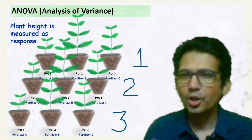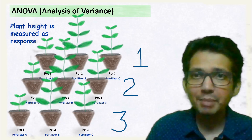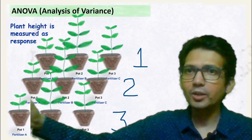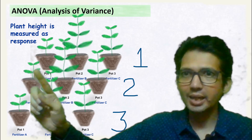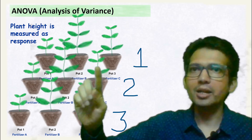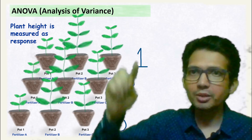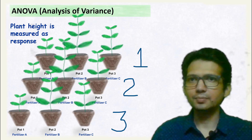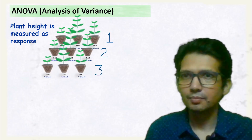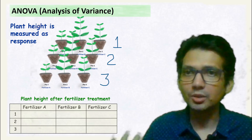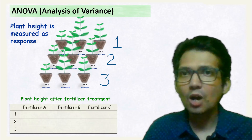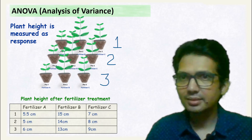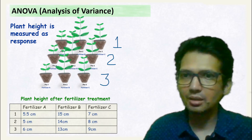Now let's say you have repeated the same experiment three times. So the whole experiment of Treatment A, B, and Treatment C has been repeated three times. After the experiment was complete, you noted down all the results in this table. So these were our results.